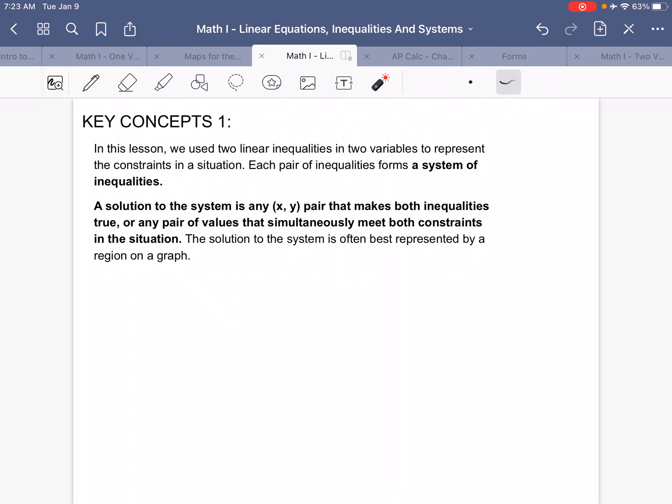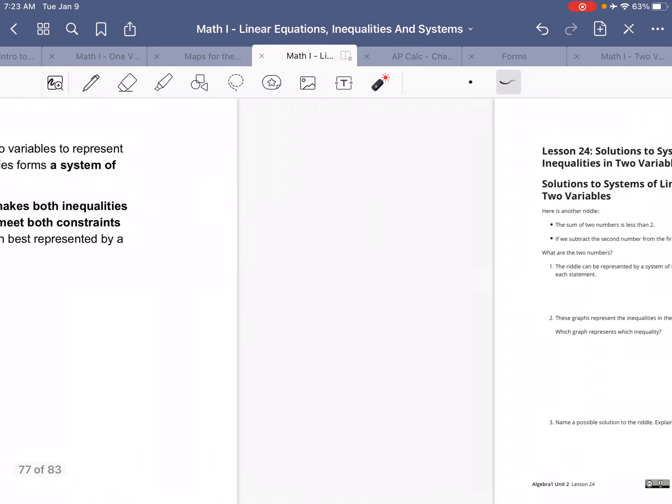A solution to the system is any XY pair that makes both inequalities true, or any pair of values that simultaneously meet both constraints in the situation. The solution to the system is often best represented by a region on a graph.